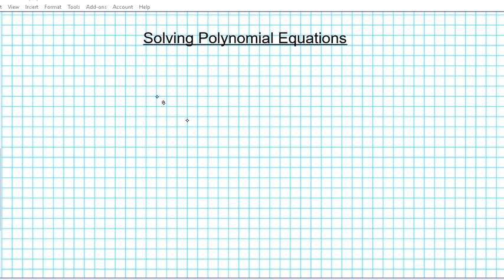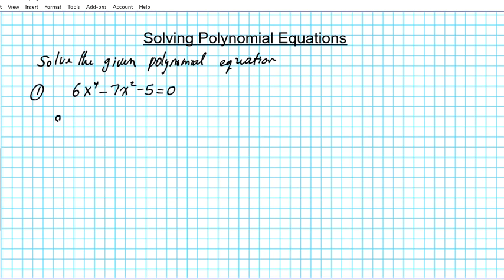Alright, so the instructions are for us to solve the given polynomial equation. Let's say we have the polynomial equation 6x^4 - 7x^2 - 5 = 0. Alright, so we're going to go ahead and solve this.